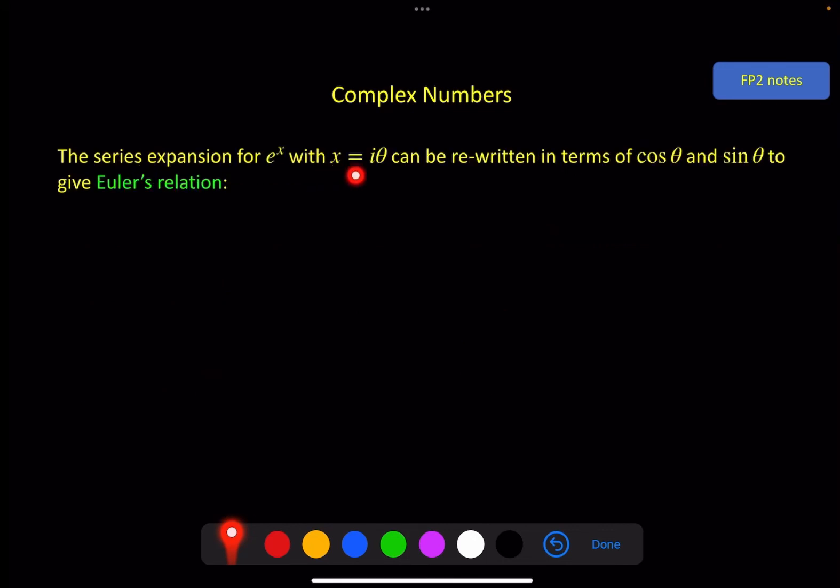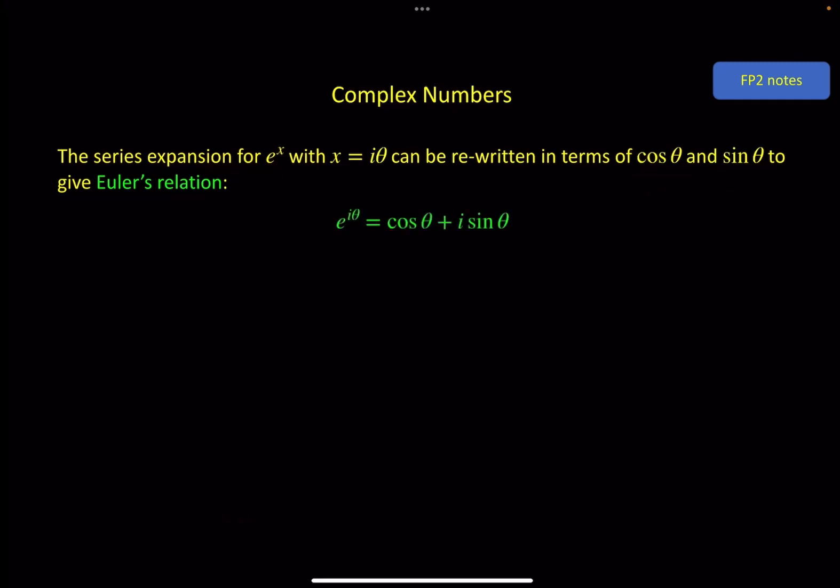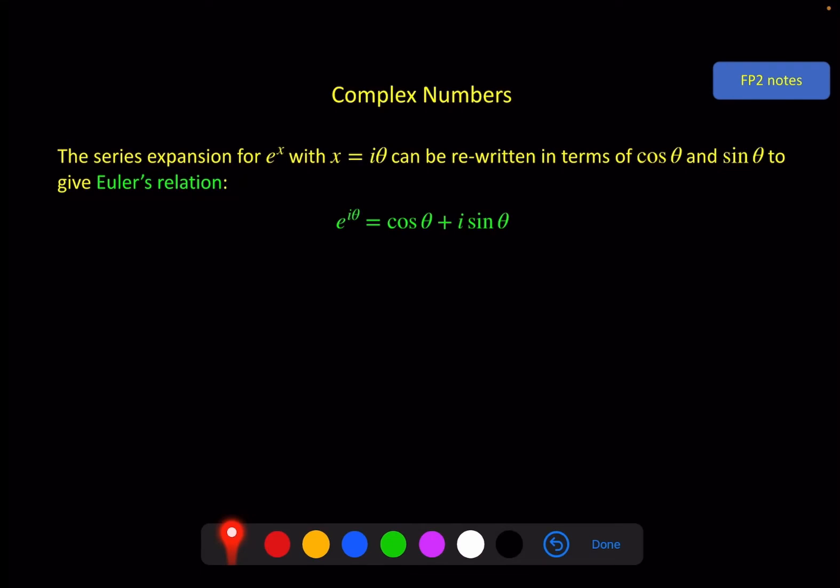Putting those together, the key thing was if x equals i theta in the series expansion for e to the x, that can be rewritten in terms of cos theta and sine theta to give this relationship here. And this is called Euler's relation after a mathematician, Euler.